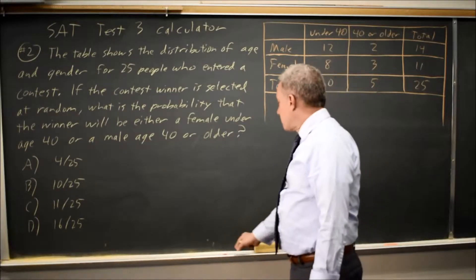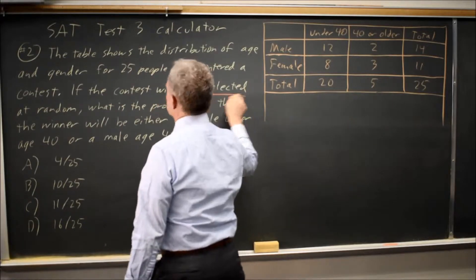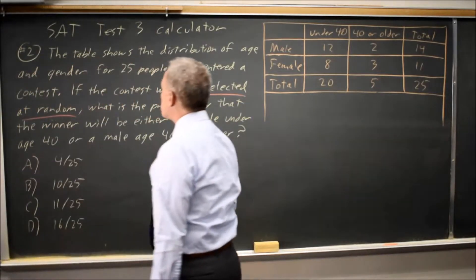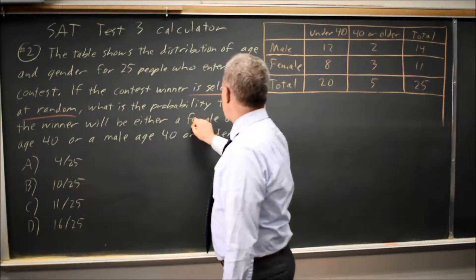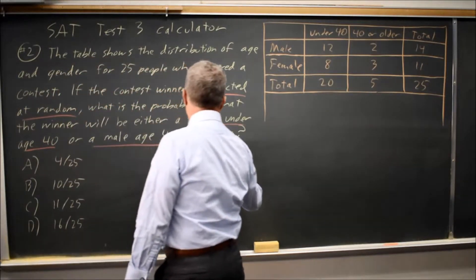If the contest winner is selected at random, the question is what is the probability that that winner is either a female under 40 or a male 40 or older.